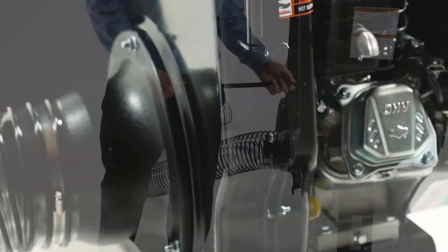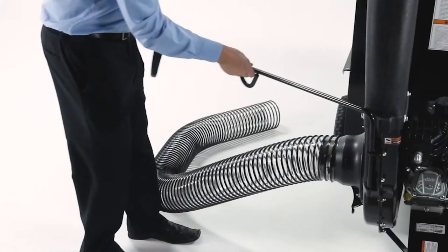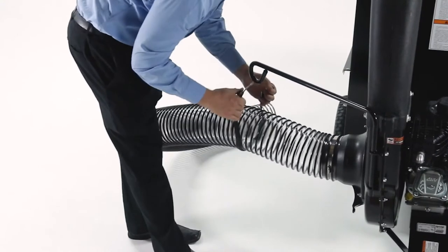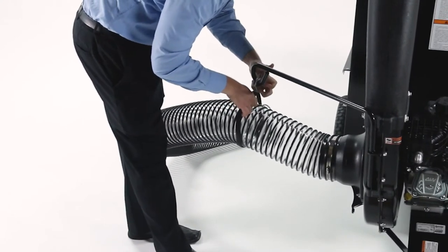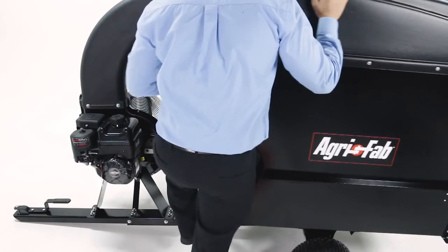Then, place the hose hanger rod into the bracket on the impeller housing. Next, loop the 25-inch tarp strap under the hose and hook the ends into the hanger rod. Now, tip the cart bed back.